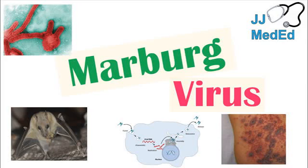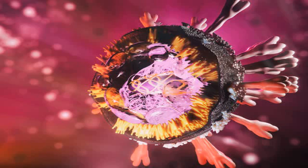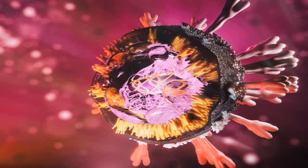Most Marburg Virus infections were repeatedly associated with people visiting natural caves or working in mines. In 2009, the successful isolation of infectious MARV and RAVV was reported from healthy Egyptian rousette bats caught in caves. This isolation strongly suggests that Old World fruit bats are involved in the natural maintenance of Marburg Viruses, and that visiting bat-infested caves is a risk factor. Further studies are necessary to establish whether Egyptian rousettes are the actual hosts or serve only as intermediate hosts.